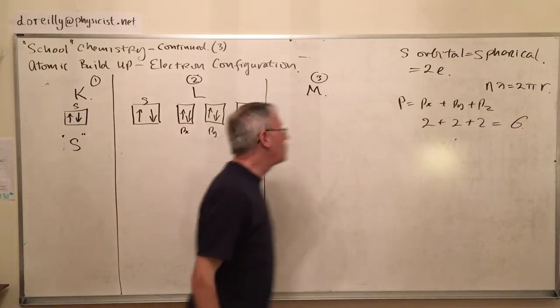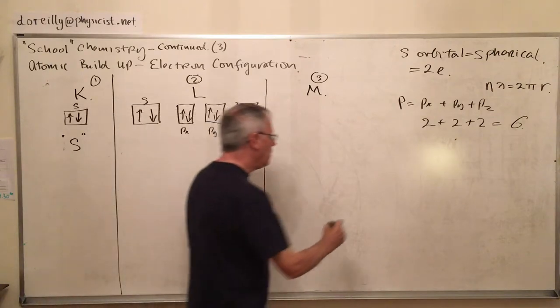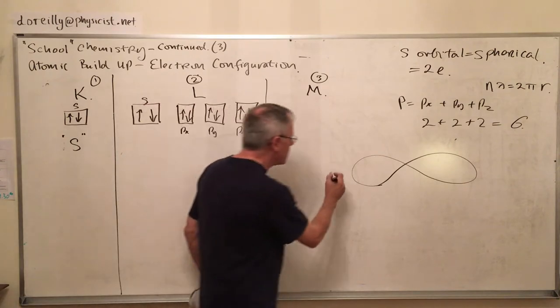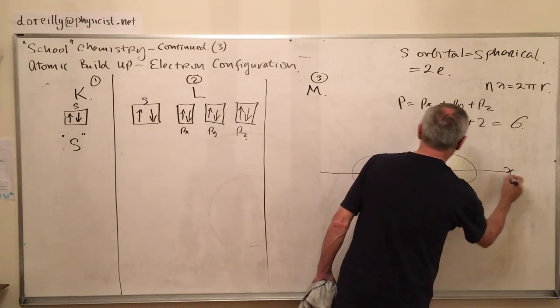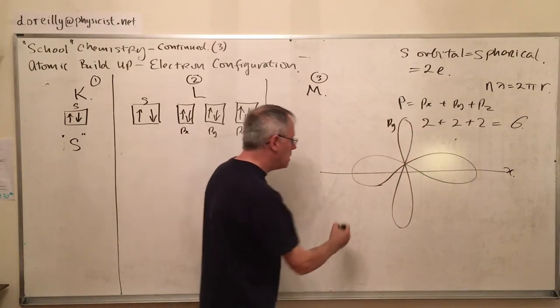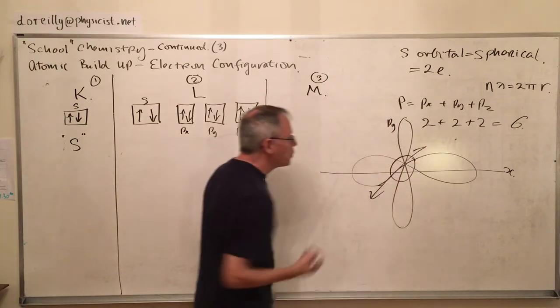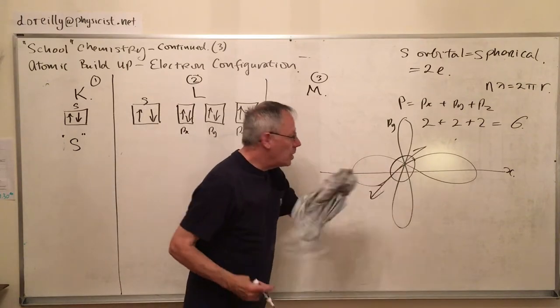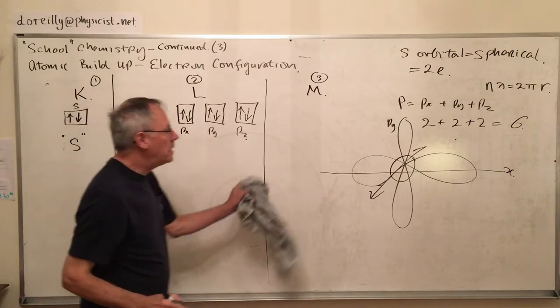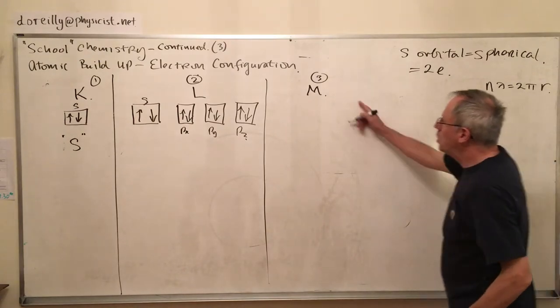We can have six electrons in the P orbitals: Px, Py, and Pz. Px is a dumbbell shape along the x-axis, Py along the y-axis, and Pz would be coming out of the page. We have one in each degree of freedom, and two electrons can at most fit into those.